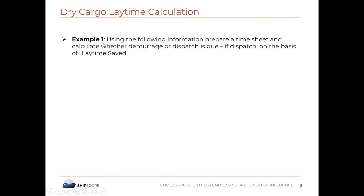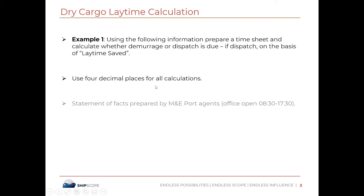Before we get into this calculation, I would like you to have a calculator, your own phone, and a piece of paper with a pen so that we can solve it together. The first example: using the following information, prepare a timesheet and calculate whether it's on demurrage or dispatch. Use four decimal places for all calculations.